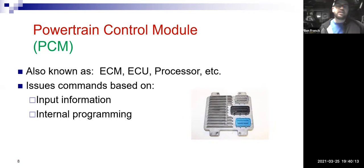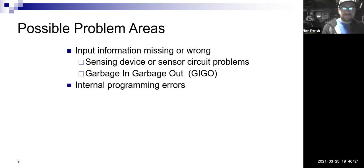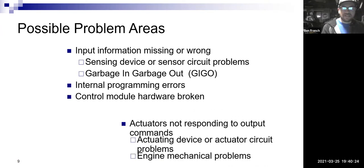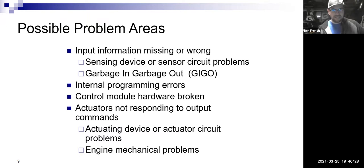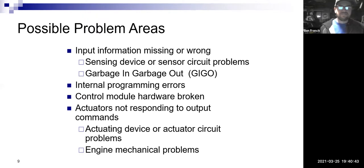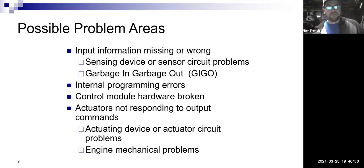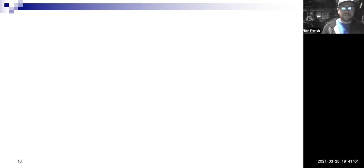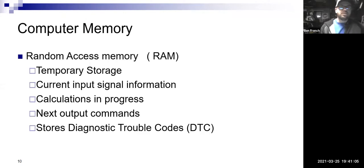Garbage in, garbage out — missing input information, actuators not responding to outputs. A lot of times people want to blame the computer. In the field, we don't have a box we can plug computers into to see if they're good or defective. So what do we do? We test all the inputs and we test all the outputs. If all the inputs were A-OK and all the outputs were A-OK, well then the computer would have to be what's wrong. But usually in that process, you'll find sensors or output control devices that aren't working right.